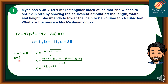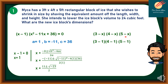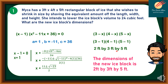We consider that the value of x equals 1. Recalling that the dimensions of the new ice block are (3 minus x) times (4 minus x) times (5 minus x), we substitute x equals 1. So we have (3 minus 1) times (4 minus 1) times (5 minus 1). Therefore, the dimensions of the new ice block are 2 feet by 3 feet by 4 feet.